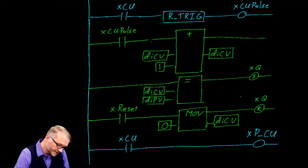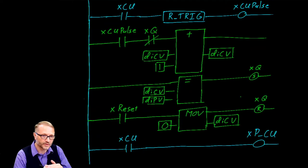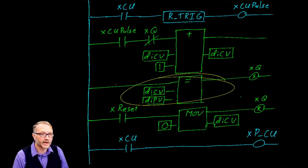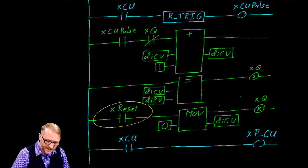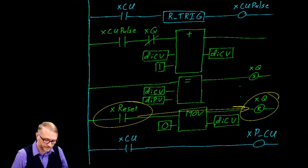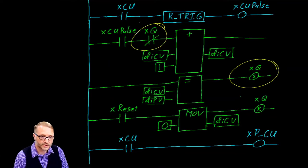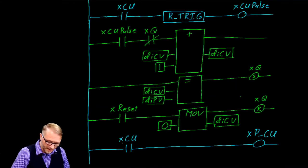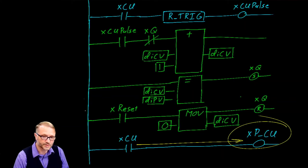We should add one minor change here. We will disable the addition if Q is set, which means it'll count every time there's a pulse until our current value is equal to program value, in which case the counter will stop and halt where it is. We have this test for equality where we're always comparing our current value to our program value. When they are equal, we latch Q. Q will remain latched until reset removes the latch. And this last rung just makes life a little bit easier by taking the value of count up and preserving it as an output called the previous count up.